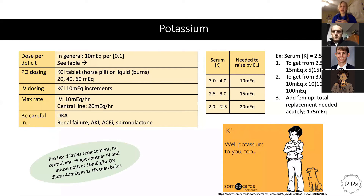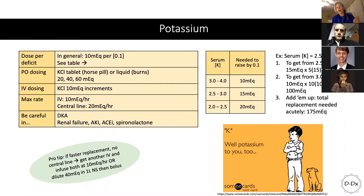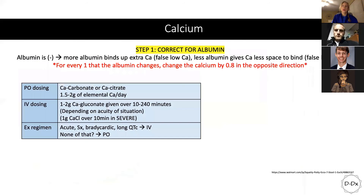A pro tip from the ER: if you need faster replacement and don't have a central line — for example, if the patient is going into arrhythmia — you can get a separate IV and infuse both IVs at 10 mEq per hour, or dilute a 40 mEq bolus in one liter of saline and give it that way through a single IV. No faster than 10 mEq per IV. Be careful in situations where potassium may be more labile.